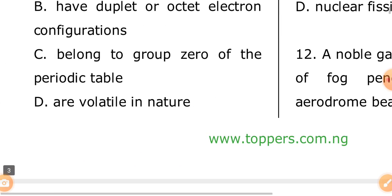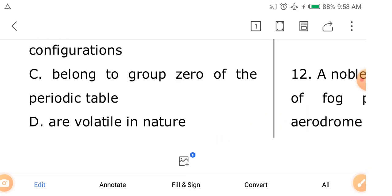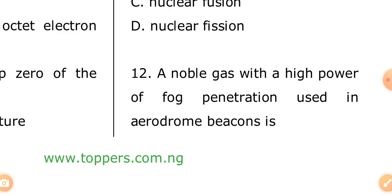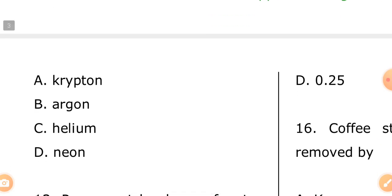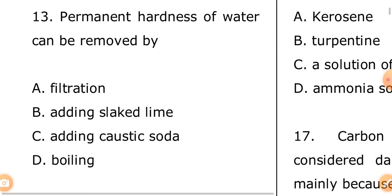We are still skipping calculation questions in this video. Question twelve: a noble gas with a high power of fog penetration used in aerodrome beacons is — A: krypton, B: argon, C: helium, D: neon. The answer is A — krypton. You can see that noble gas was already referenced here.